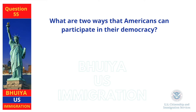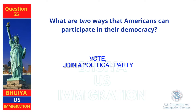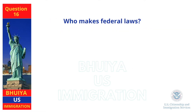What are two ways that Americans can participate in their democracy? Vote, join a political party. Who makes federal laws? Congress.